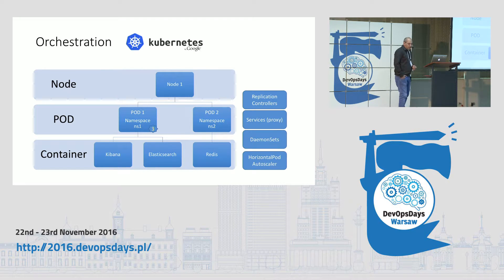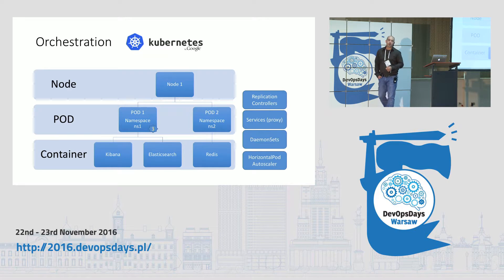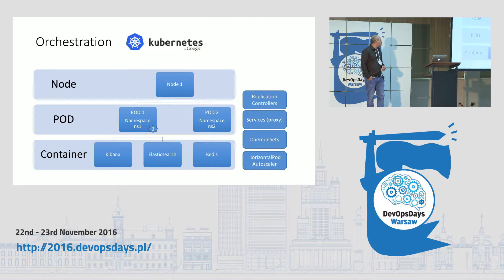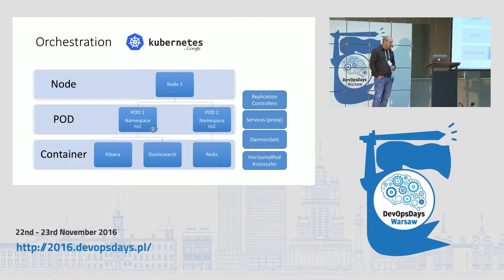Kubernetes also has services, which are completely different from Swarm services. Services are network endpoints where you can access your applications running in the pod. And there are daemon sets, which are a kind of global installation of applications — when you define a daemon set, the application will be distributed to every node.